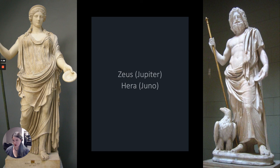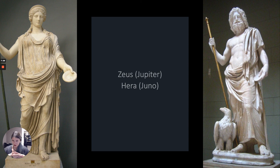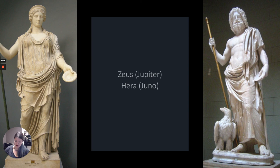Zeus's wife is Hera, whose Roman name is Juno. She's the goddess of marriage, which is kind of a bummer — she's married to Zeus, and he cheats on her constantly. A lot of the tragedies and drama in these mythological stories are because of Zeus's philandering. We have demigods that are half-god, half-human, and a lot of them come from Zeus having affairs with mortal women. So poor Hera is the goddess of marriage, and her marriage is not so great.